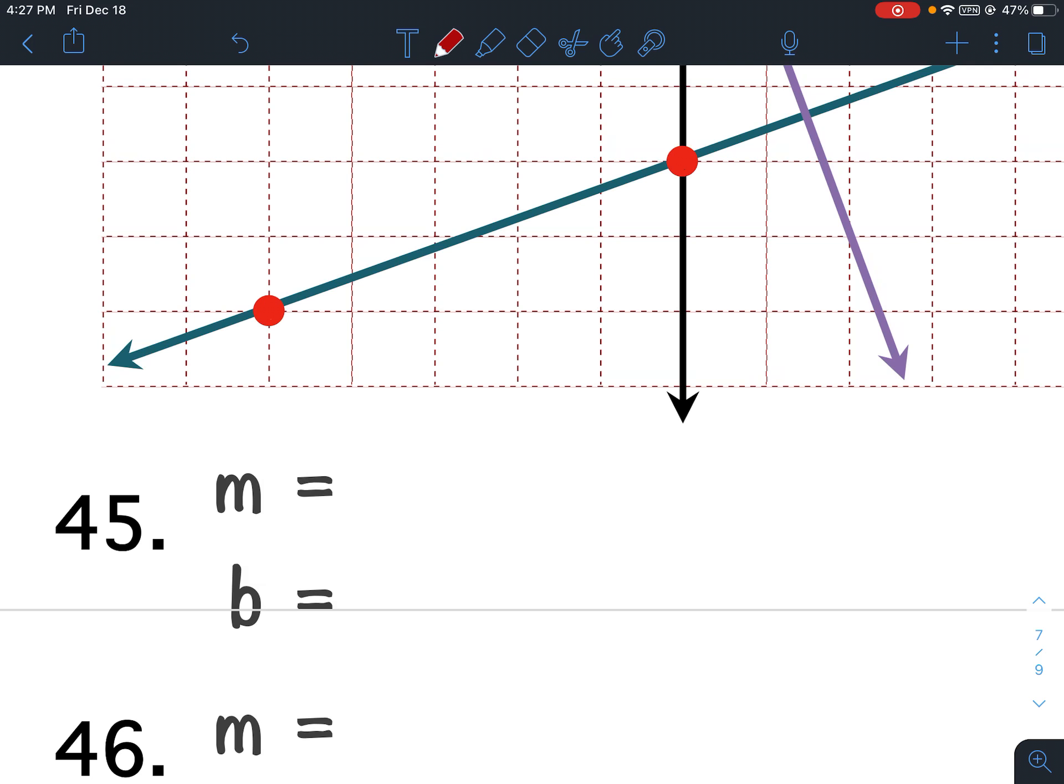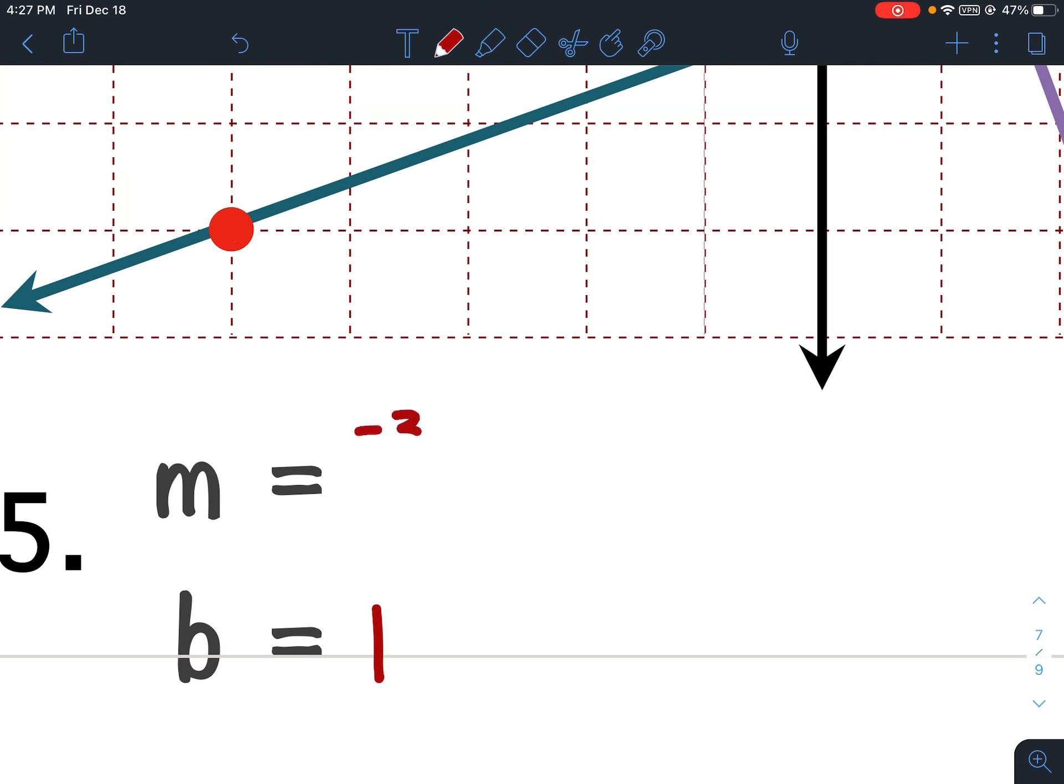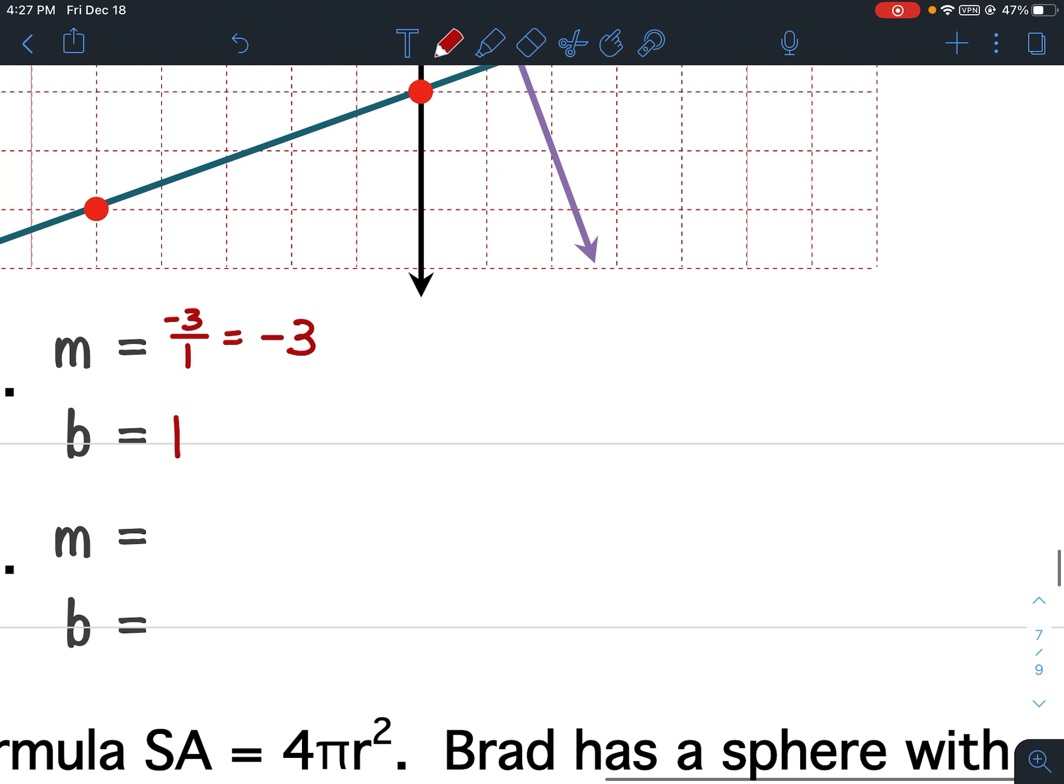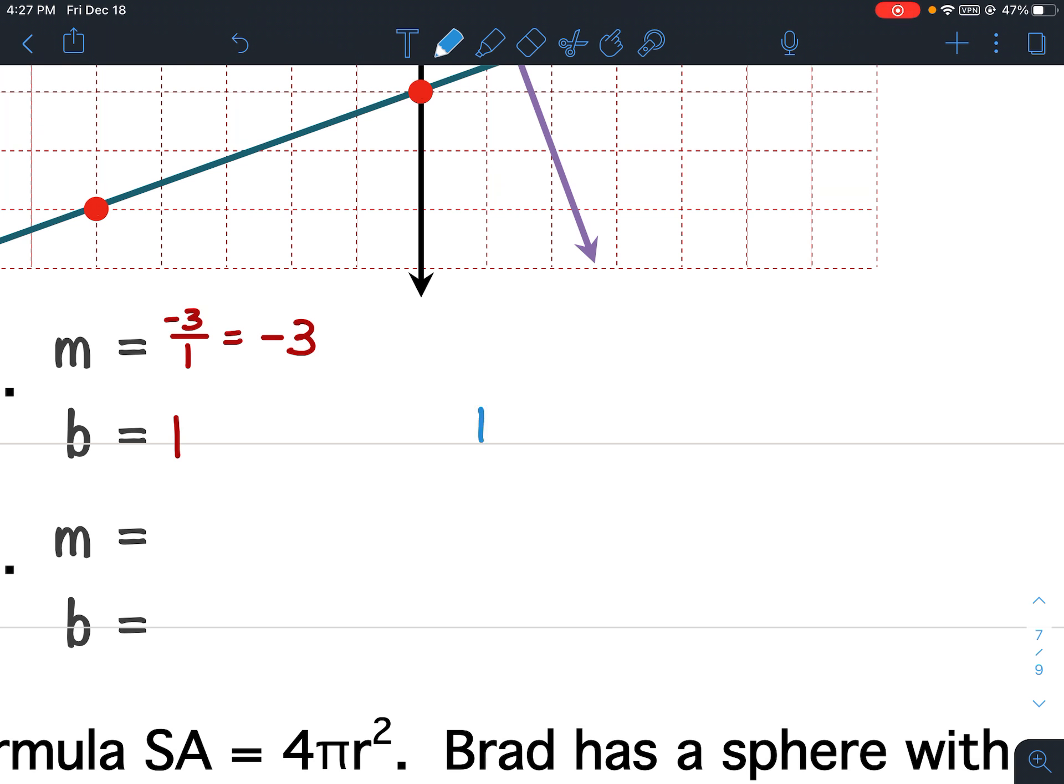So for 45, my y-intercept is 1. And my slope is, again, negative 3 over 1. Now, this is not in simplest form. We want to put it in simplest form, so we want it to be negative 3. So my equation for this problem, y equals negative 3x plus 1.